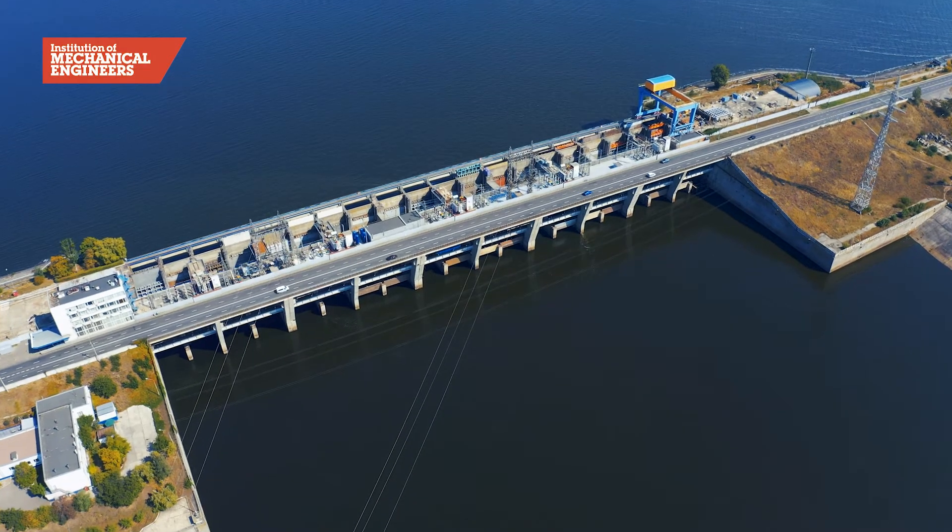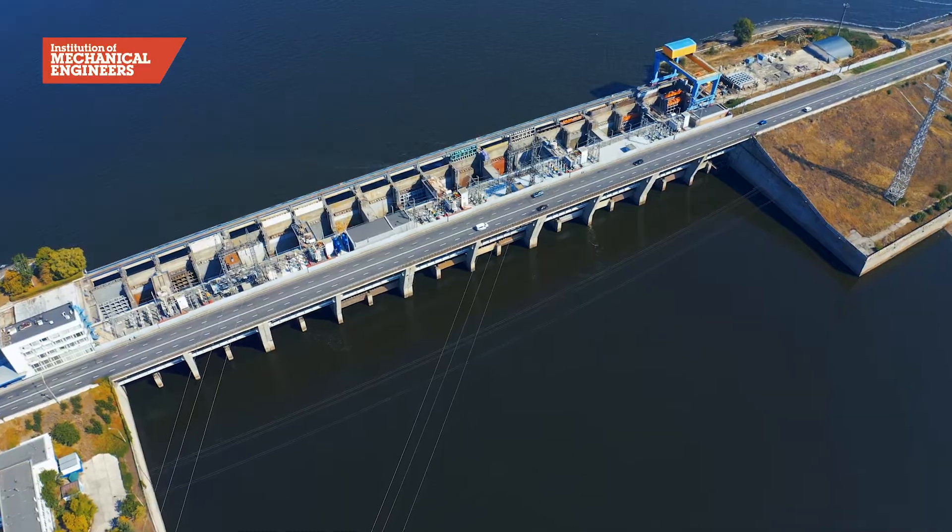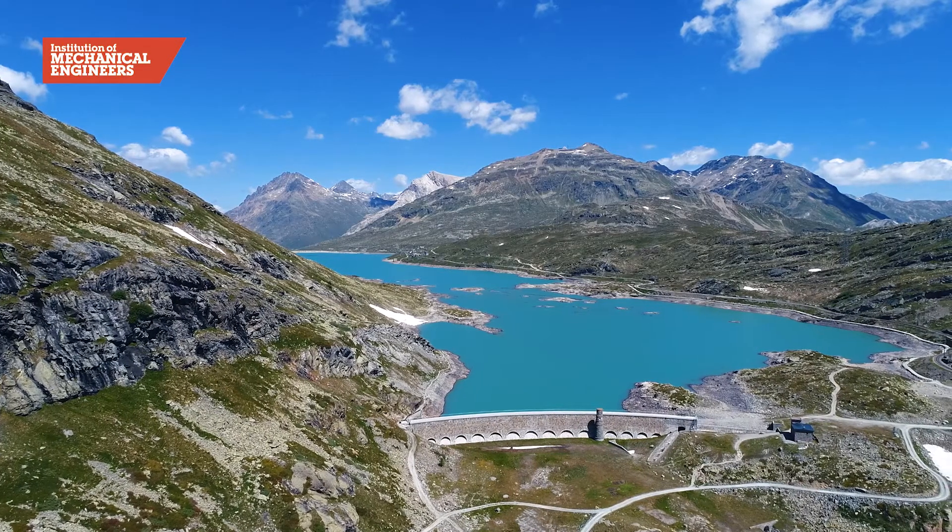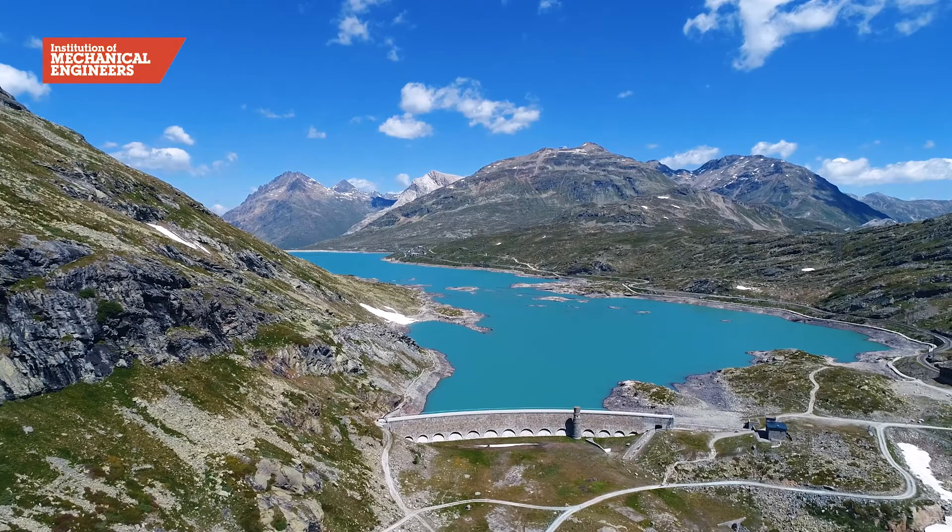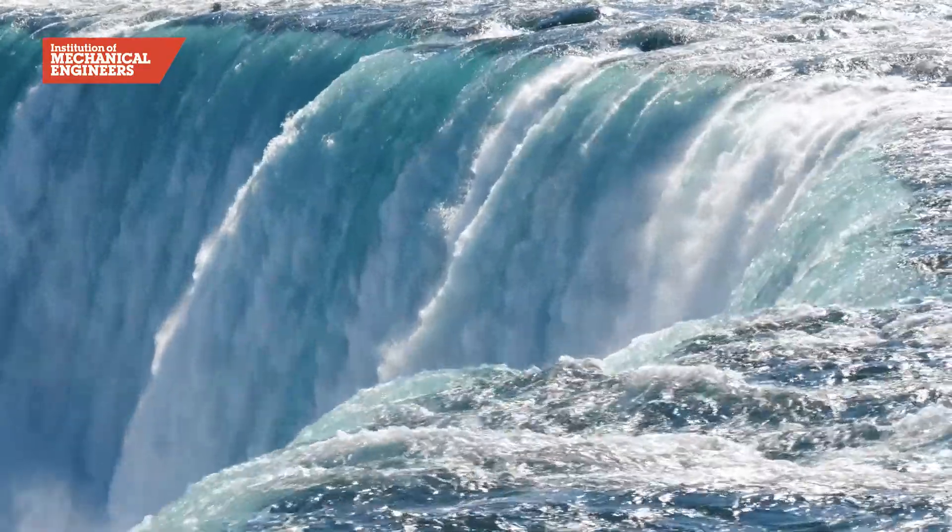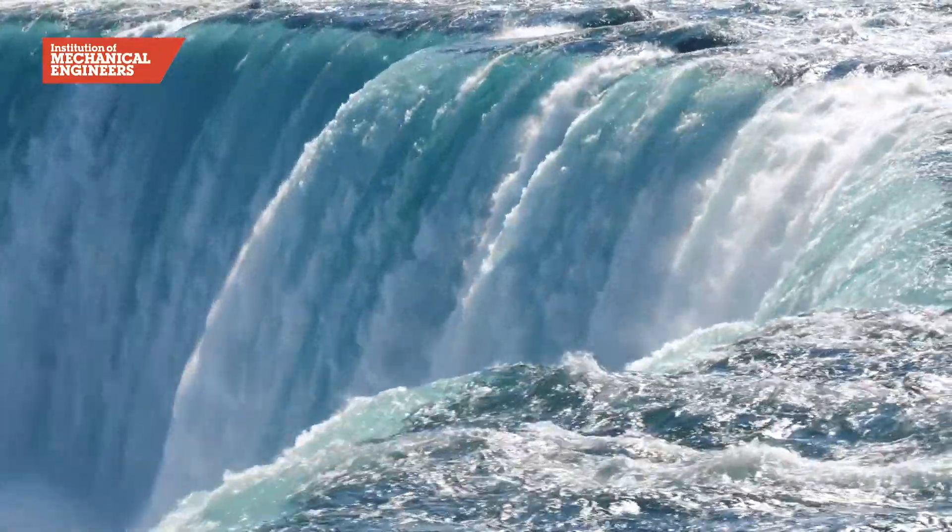In hydroelectric power stations, turbines are driven by the kinetic energy in falling water. Often the water comes from behind a dam built across a river valley. The water high up behind the dam contains gravitational potential energy. This is transferred to kinetic energy as the water rushes down through the tubes and over the turbine blades.